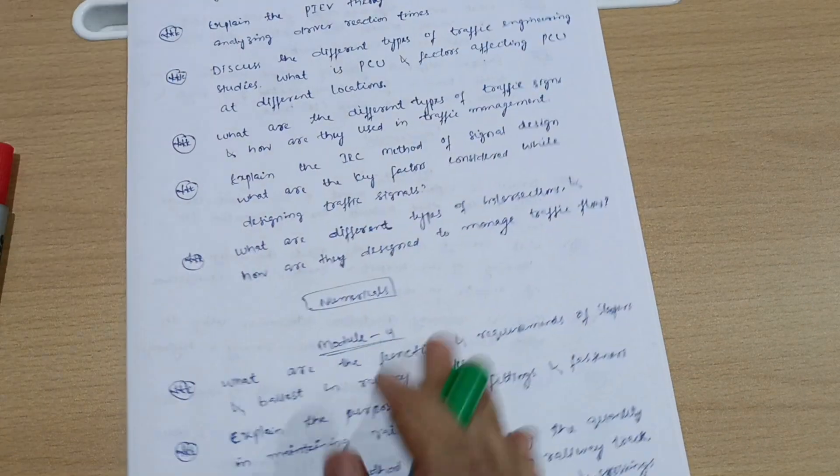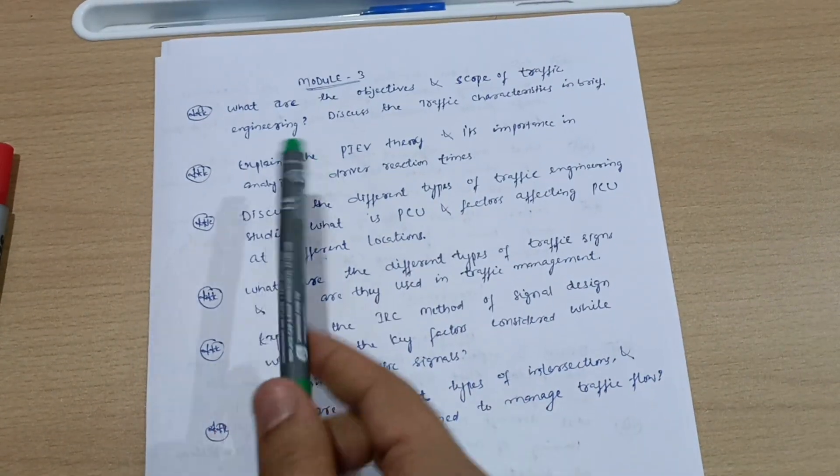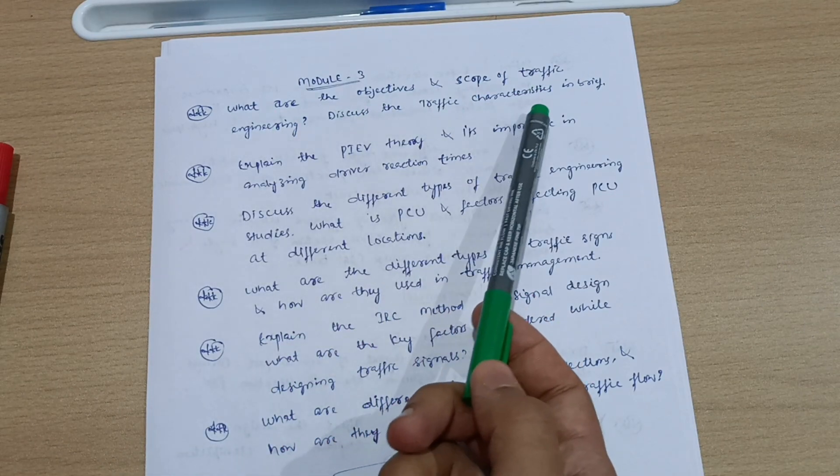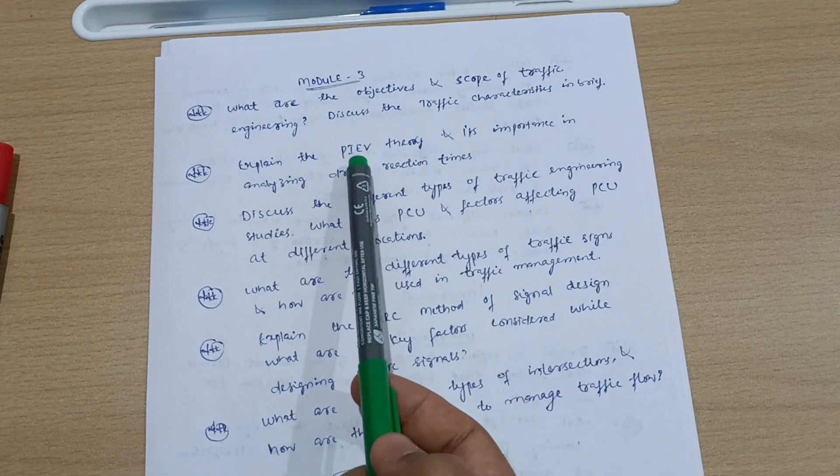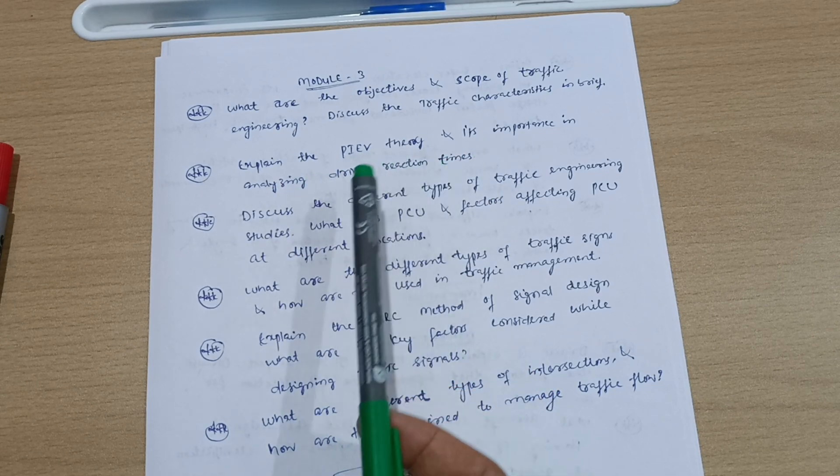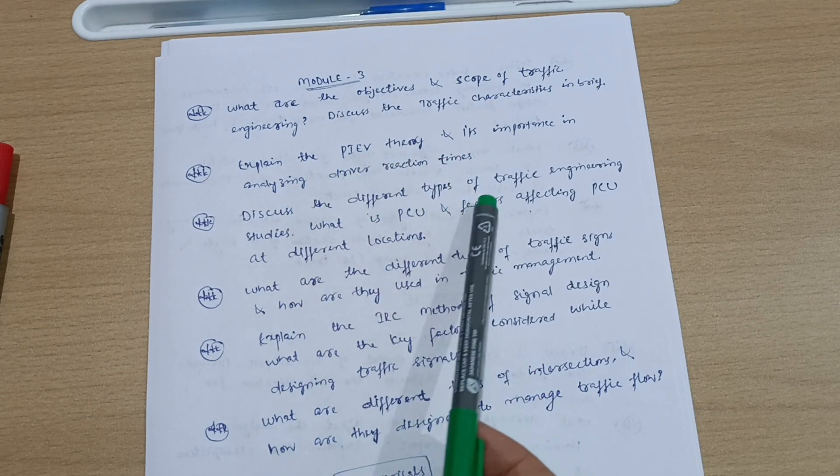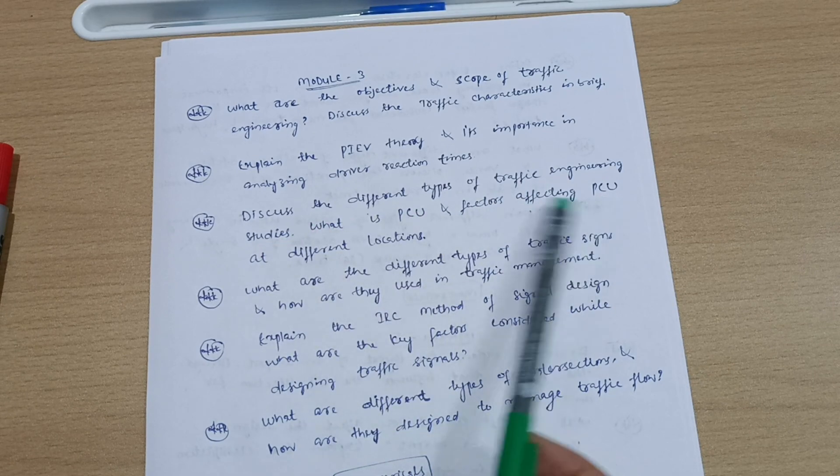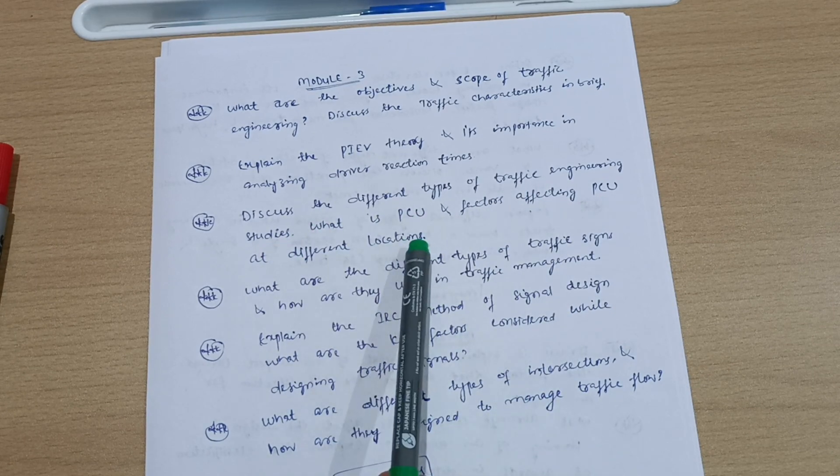Module third. What are the objectives and scope of traffic engineering? Discuss the traffic characteristics in brief. Explain the PIEV theory and its importance in analyzing driver reaction times. Discuss the different types of traffic engineering studies. What is PCU and factors affecting PCU at different locations? This may be seven or eight marks question.